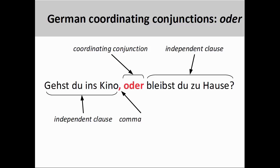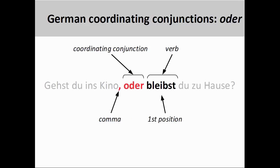'Oder' can also be used to present alternatives between activities expressed in two independent clauses. The first independent clause, 'Gehst du ins Kino?' — 'Are you going to the movies?' — forms the first alternative, and the second independent clause, 'Bleibst du zu Hause?' — 'Are you staying home?' — presents the second alternative. Both clauses are questions and have a second-person singular present tense verb in the first position. German forms questions by putting the verb in the first position. The coordinating conjunction 'oder,' therefore, does not alter the syntax of the second independent clause.